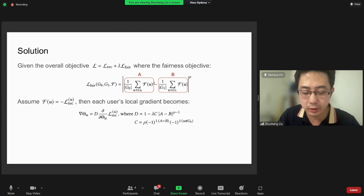So as a solution, we consider the setting where F(u) is related to the negative of local recommendation loss—the smaller the loss, the higher the performance. Then the gradient of the overall loss that combines the fairness and the recommendation accuracy is now separable.